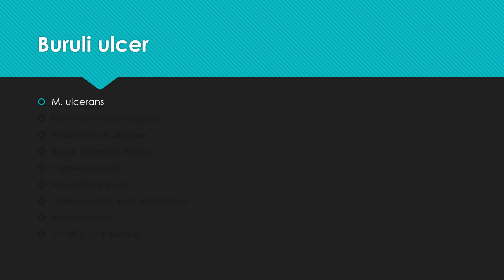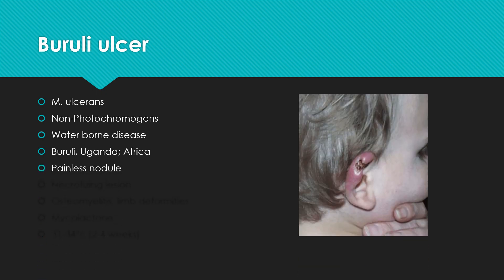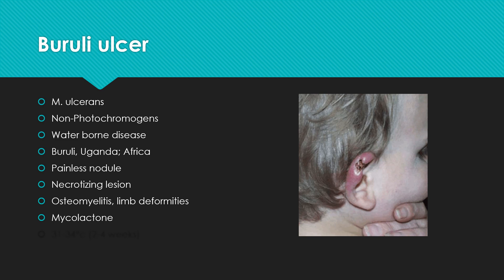The causative agent of Buruli ulcer is Mycobacterium ulcerans. It is called Buruli ulcer because it is derived from the Buruli district of Uganda, where a large outbreak had occurred. It is a non-photochromogen, meaning it does not produce pigment. It is a waterborne disease. The patient presents with a painless nodule which becomes necrotic later. The patient may also develop osteomyelitis and limb deformities. Mycobacterium ulcerans produces an exotoxin called mycolactone, which is involved in the pathogenesis. It has a narrow temperature range for growth of 31 to 34 degrees Celsius and grows slowly; colonies appear in 2 to 4 weeks.